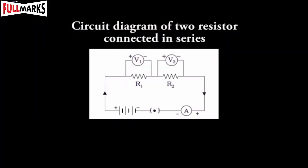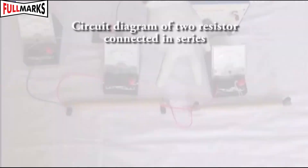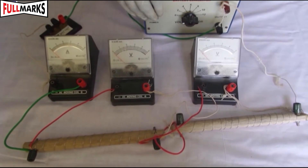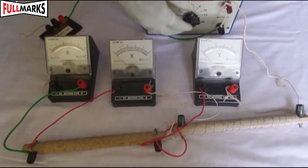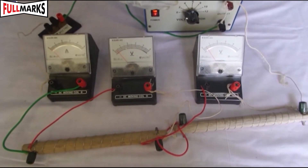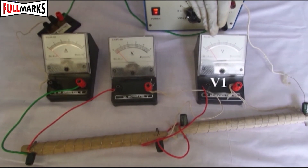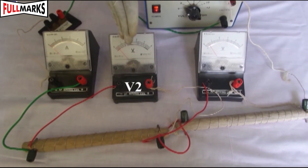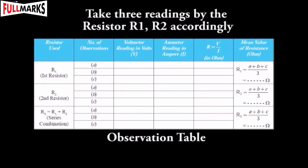Procedure: Make the connections according to the circuit diagram. Power on the battery and give three different inputs. Record the ammeter reading and the voltmeter reading. Measure the potential difference across the first resistor — let it be V1. Similarly, measure the potential difference across the second resistor separately — let the value be V2. Place the values in the observation table.